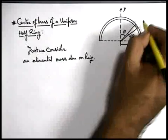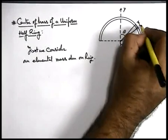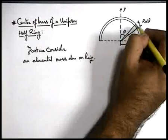In this situation, the element will be of linear width r d-theta if r is the radius of this ring.